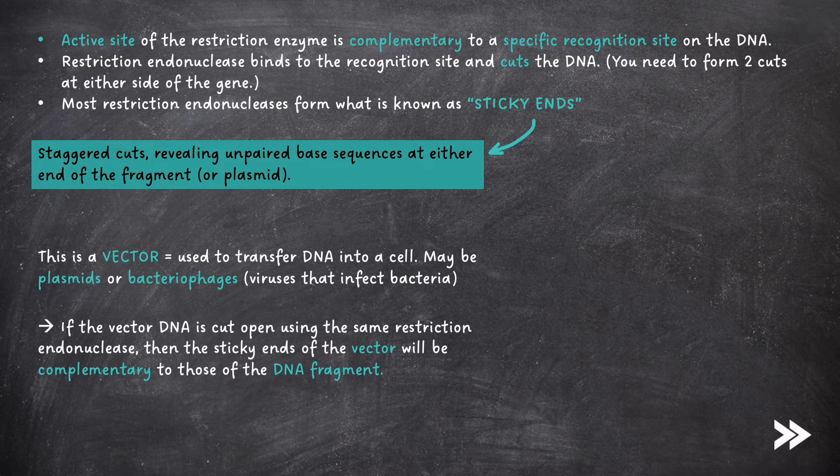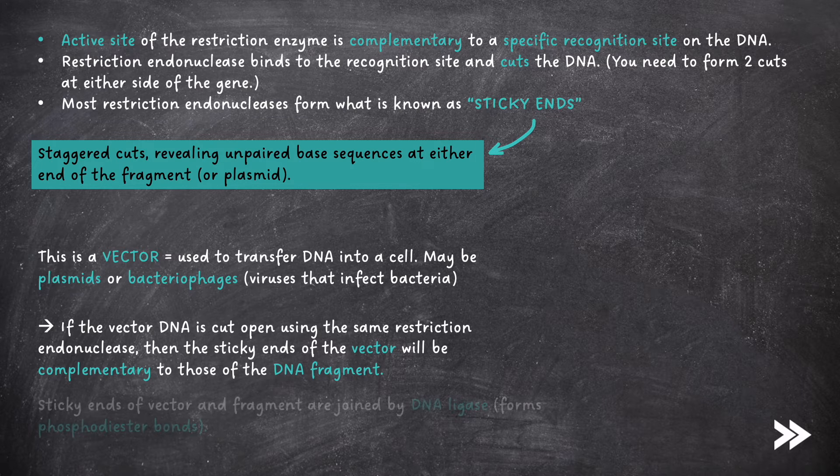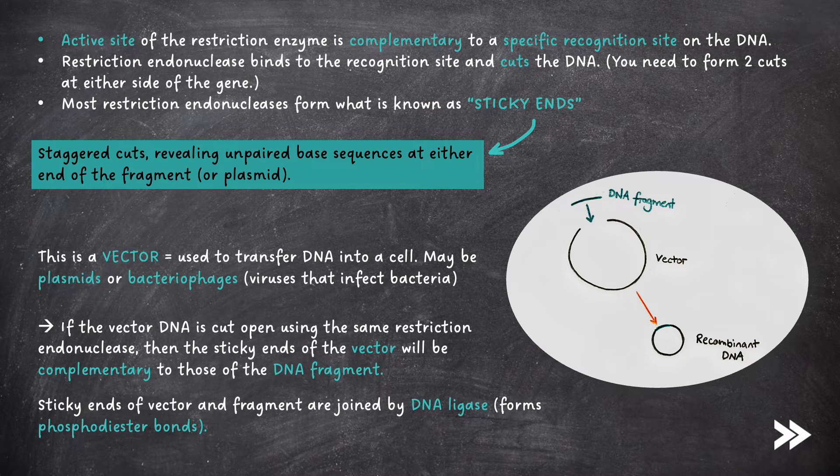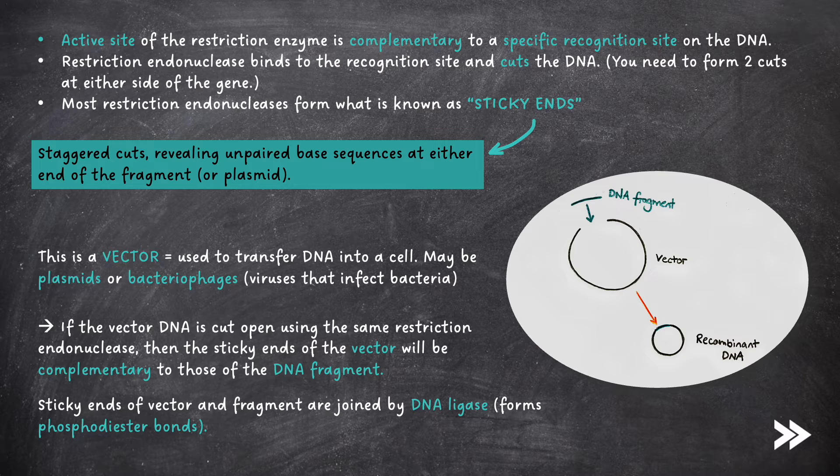If the vector DNA is cut open using the same restriction endonuclease, then the sticky ends of the vector will be complementary to those of the DNA fragments. Sticky ends of the vector and DNA fragments are then joined together by a DNA ligase enzyme, which catalyzes the formation of phosphodiester bonds between bases at either end of the fragment. Note that using restriction enzymes is less useful, as they may cut DNA with introns too.